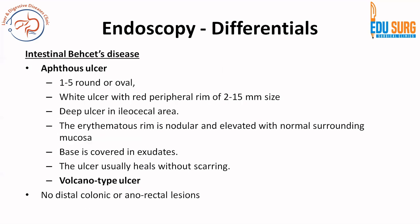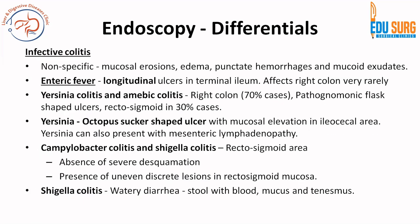Coming to aphthous ulcers of Behçet's disease: Behçet's disease has the classic description of aphthous ulcers — a deep punched-out ulcer in the ileocecal area. There can be 1 to 5 round or oval white ulcers with a red peripheral rim. The base is covered in exudates, and the ulcer usually heals without scarring. It is a volcano-type ulcer with no distal colonic or anorectal lesion. Remember, aphthous ulcers are not specific to Behçet's disease and can be seen in other etiologies.